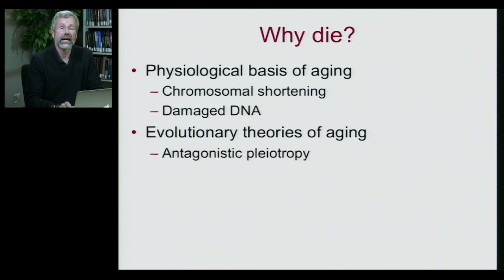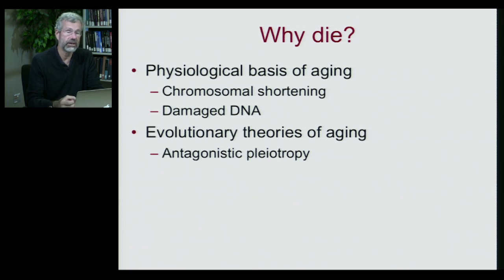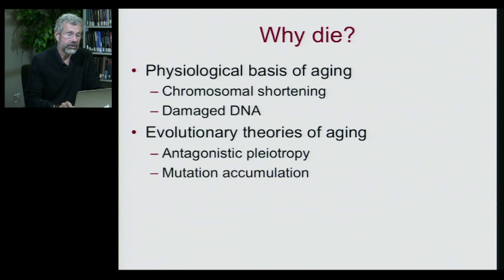The first evolutionary theory is antagonistic pleiotropy. Pleiotropy, that term from population genetics, is where one gene has several different effects. Antagonistic pleiotropy is where a gene may have a positive effect on some traits but negative effects on others. The second evolutionary theory is mutation accumulation, where certain mutations may accumulate in a population and it's very hard to get rid of them.